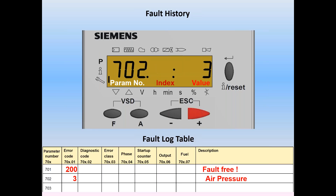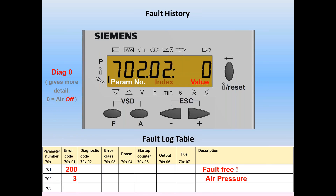Now when we do plus or minus, we increment or decrement the index field instead of the parameter number. Push plus and we go to index 02. We have parameter 702, index 02, and in this case a value of 0. That 0 is our diagnostic code for the second fault. Diagnostic 0 gives us more detail: the error pressure was off when it should have been on. We log that in the table as 'error pressure off.'